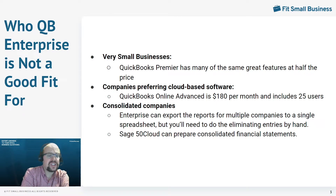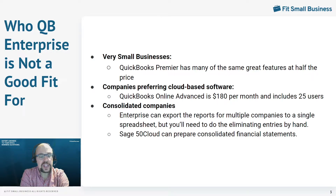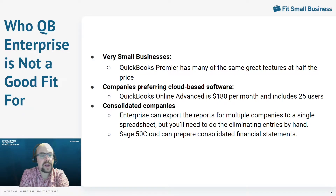If you need to consolidate companies — you're a pretty large company with subsidiaries, a parent company, and you need to consolidate all of these into one set of financial statements — Enterprise will help you a little bit, but it really does not do the entire consolidation for you. You can export financial statements for multiple companies into a single spreadsheet, and then use that spreadsheet to make all your eliminating entries by hand. Probably the least expensive alternative is Sage 50 Cloud, which can actually do the consolidation process for you. So if consolidation is an important feature, I would probably not go with Enterprise.